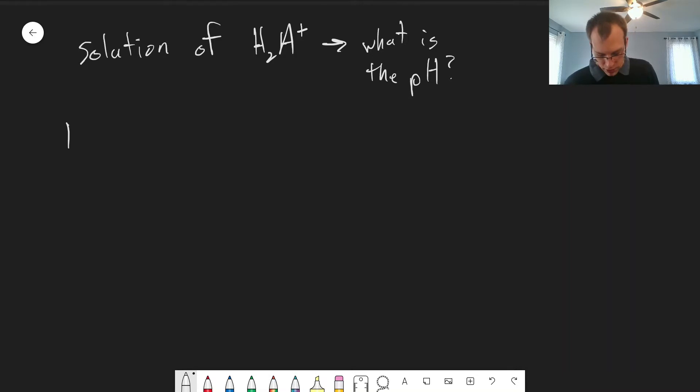Okay, so what are the equilibria going on here? Well, as we just saw in the last video, our H2A plus can dissociate into H plus plus HA and that'll be given by KA1. And then HA can dissociate into H plus plus A minus and that'll be governed by KA2.